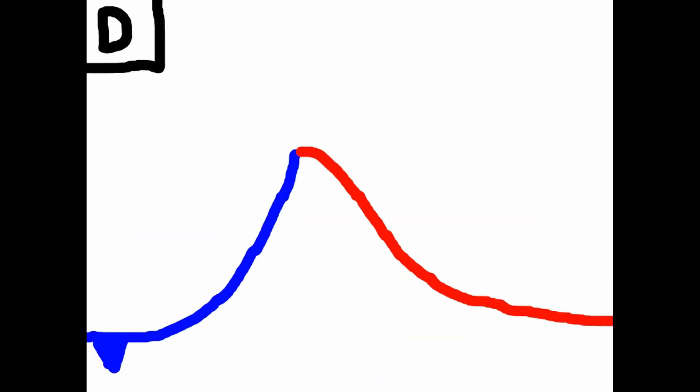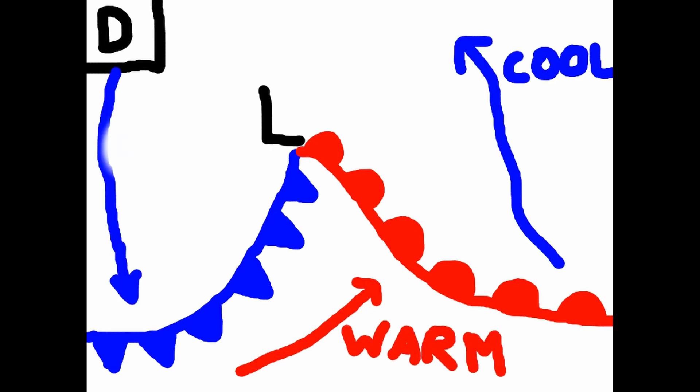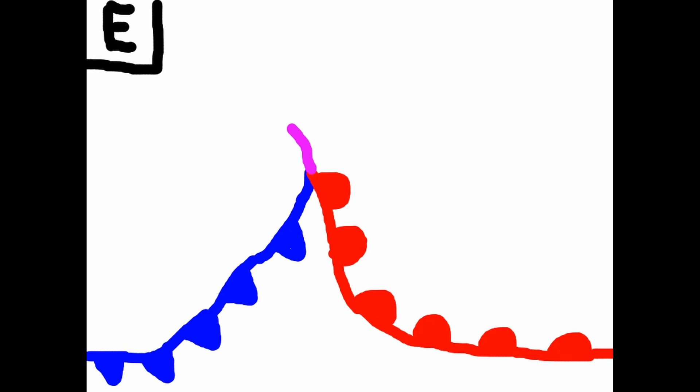A temperature difference is essential in the definition of a front because it implies a density difference. A good example of a non-frontal boundary is the dry line, which is often present as a meridional line through western Texas in spring and summer. It separates dry air to the west from humid air to the east. A similar boundary sometimes occurs in northern Argentina.